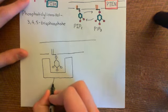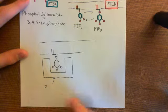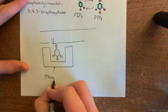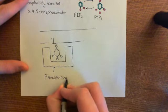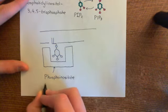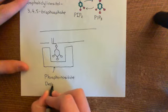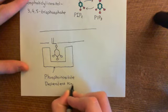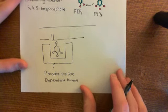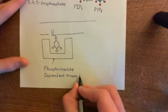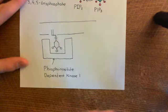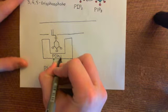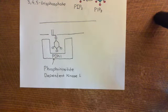This is phosphoinositide-dependent kinase 1, often abbreviated to PDK1. There are different forms of phosphoinositide-dependent kinase enzymes, but the most important form is PDK1. We'll label this as PDK1, and colour it in because it's so important.